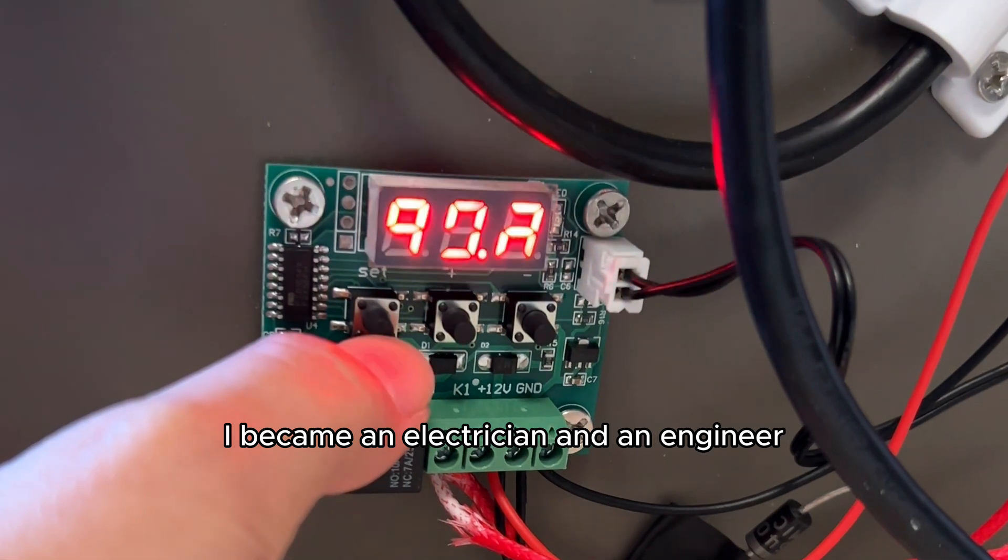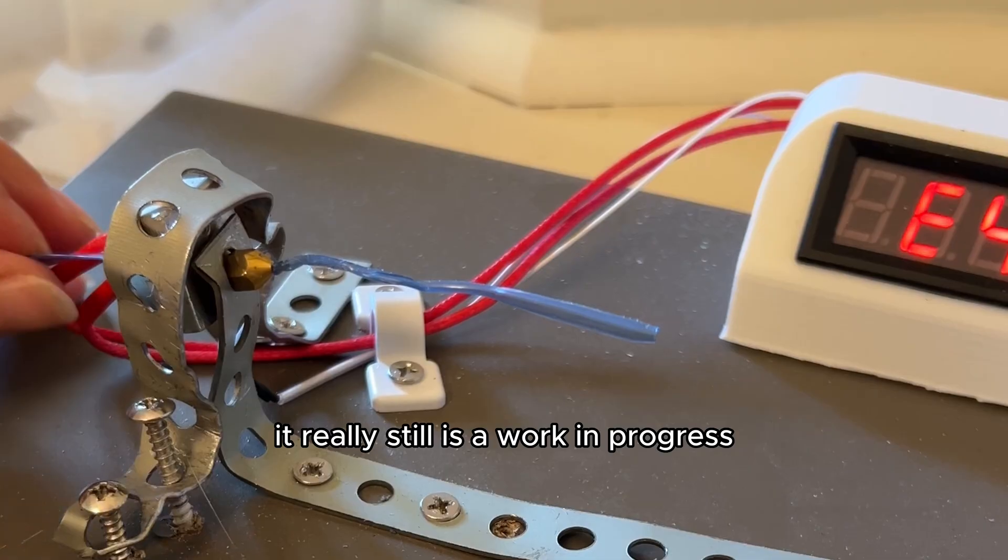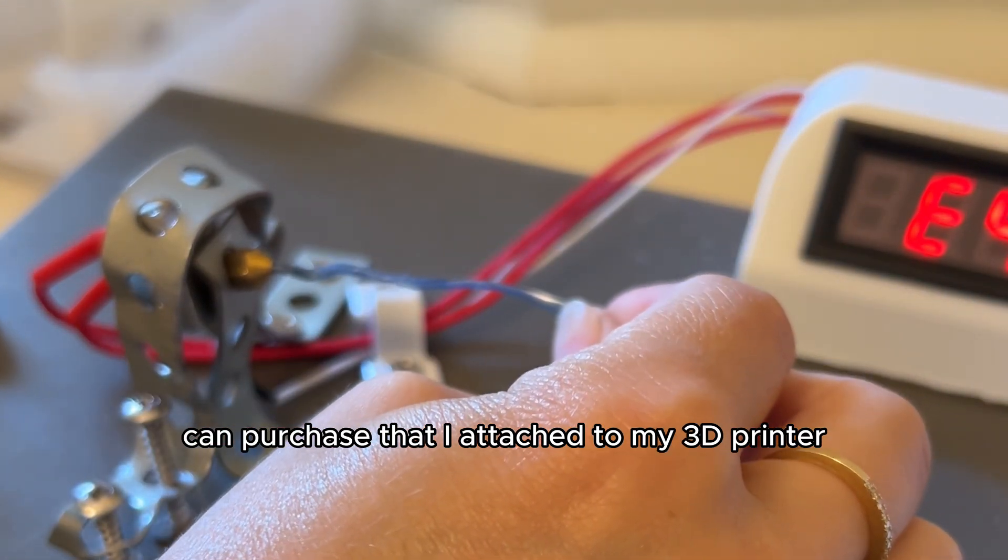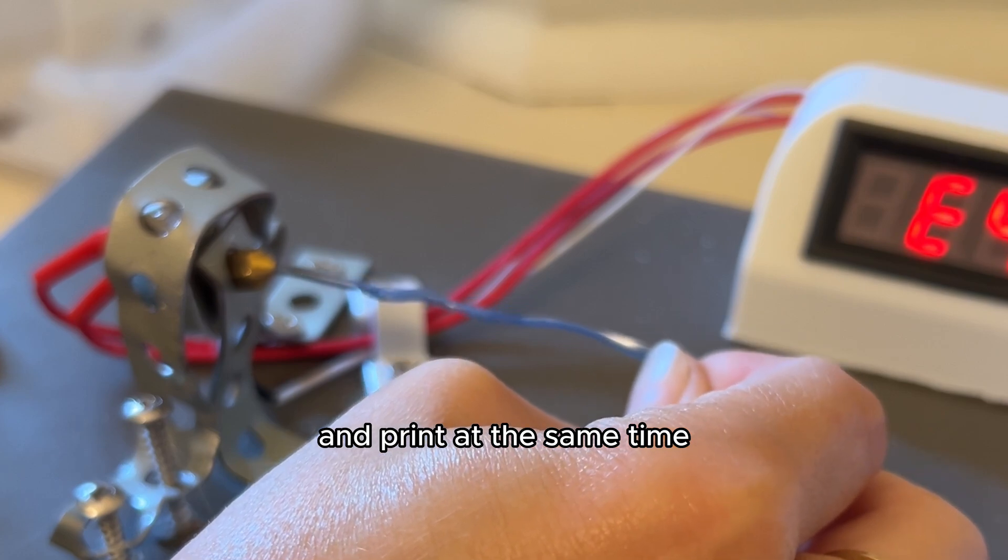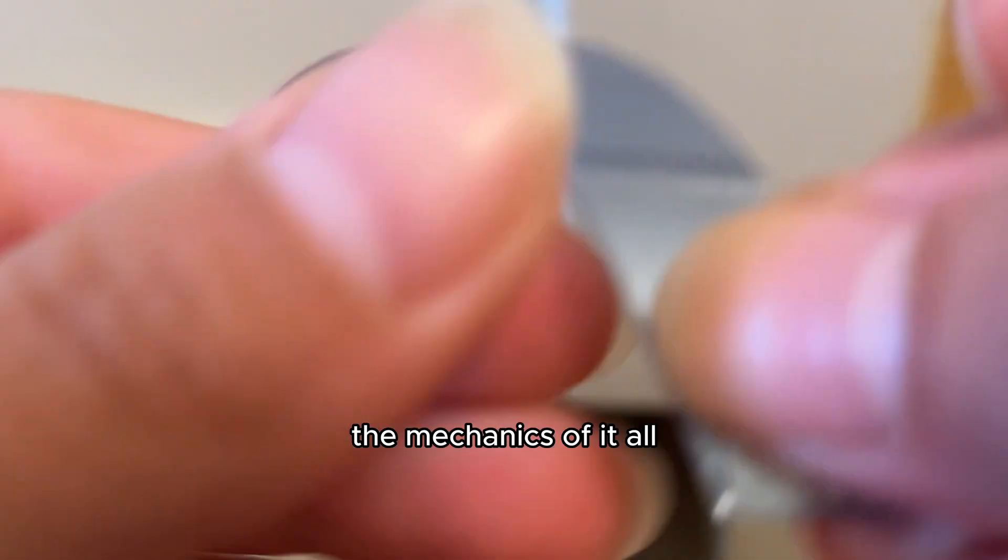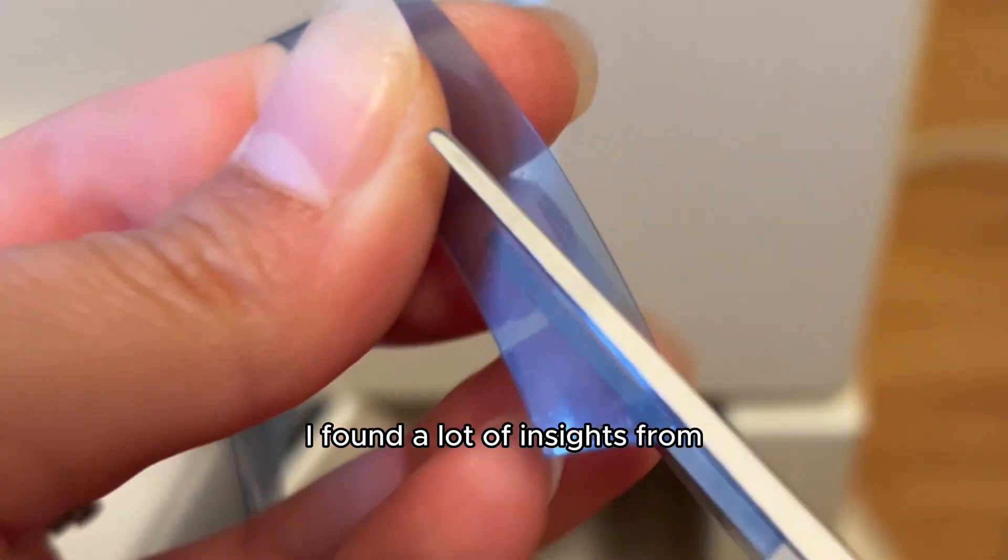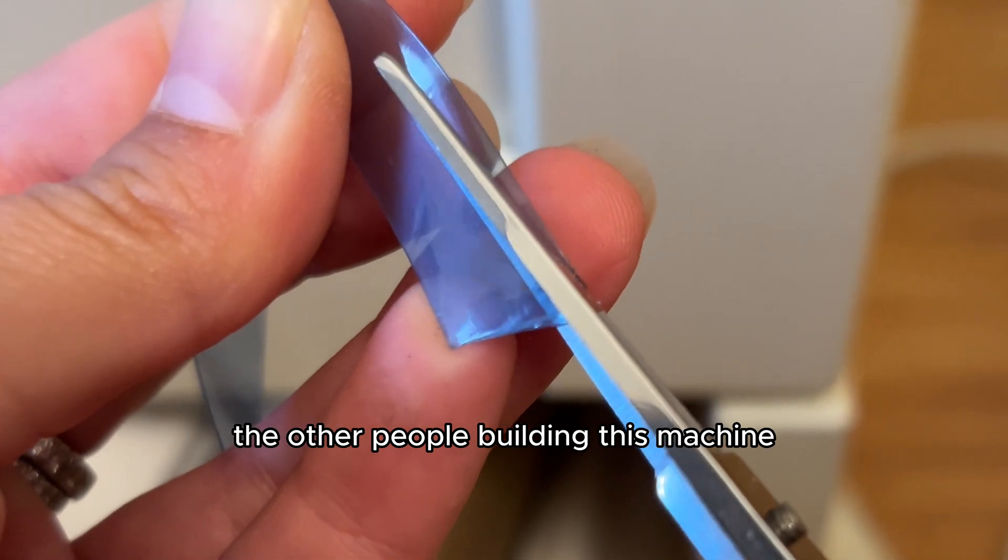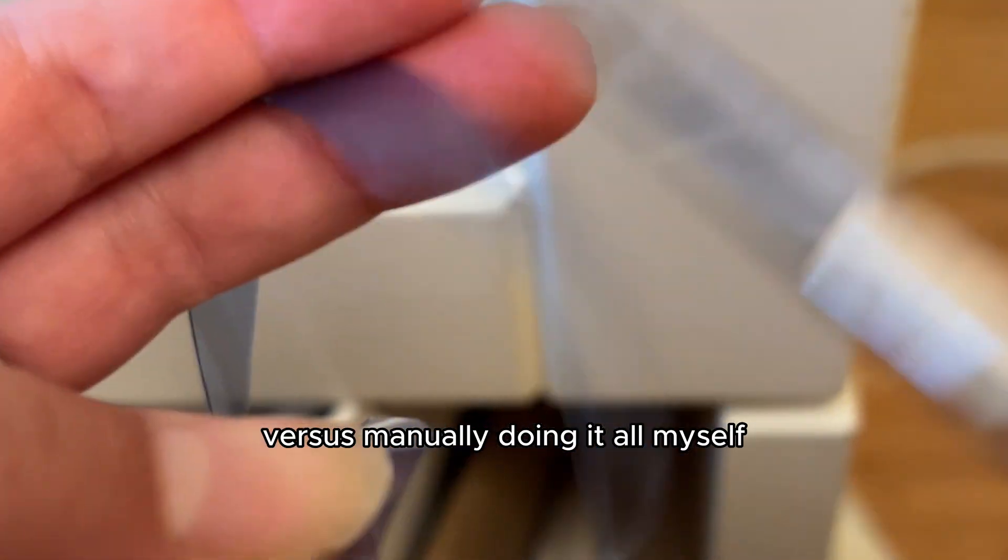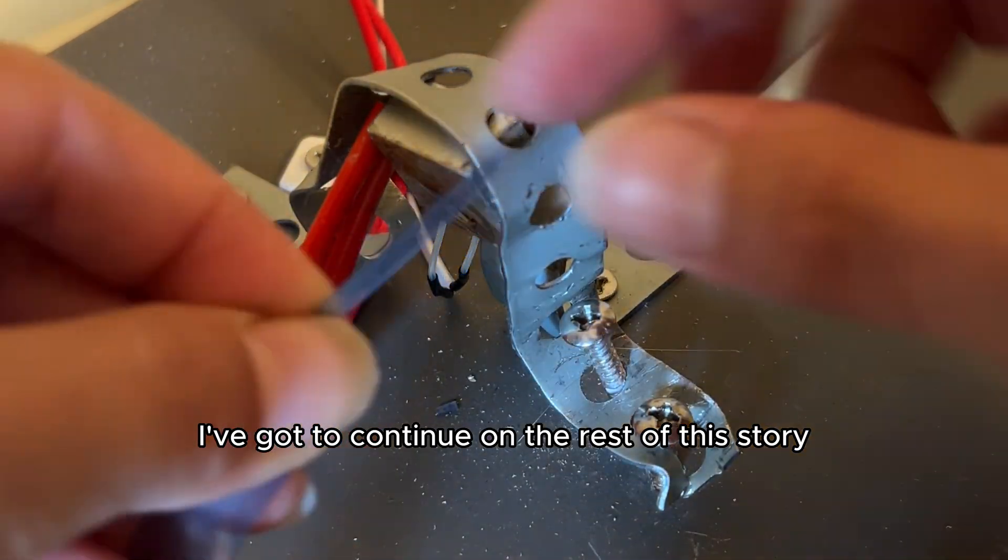It took me about four full months to successfully build this. I became an electrician and an engineer and I ended up getting it working. I recently found out that there's a piece that I can purchase that I attach to my 3D printer that will help me melt my plastic and print at the same time, but I haven't gotten that yet. So right now I'm still kind of struggling through the mechanics of it all, but I'm still trying to optimize the process so that it becomes much more automated versus manually doing it all myself.